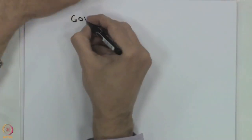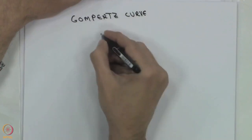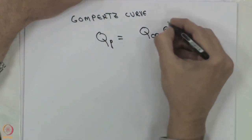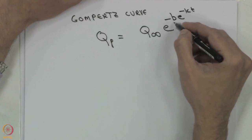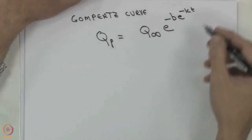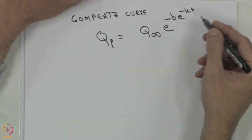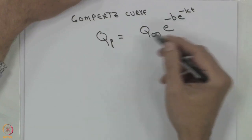The logistic curve is symmetric about the point of inflection. Instead, one can also use other logistic curves, such as the Gompertz curve: Qp = Q infinity × e^(−B × e^(−KT)). Here you have Q infinity and two coefficients B and K; you take log twice and obtain the coefficients by linear regression. However, the Gompertz curve is not symmetric about the point of inflection and has different characteristics.